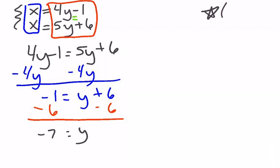When you're solving a system, you need x and a y. So I have my y is negative 7, and now I can substitute into either one of my equations.